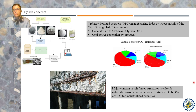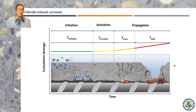For example, due to this corrosion, the structural maintenance costs are estimated to be around 4% of GDP for industrialized countries. Studying the diffusion mechanisms of the chloride ions can help in the reduction of these costs, as well as predicting lifetime in service.